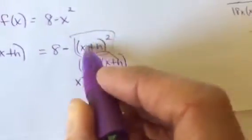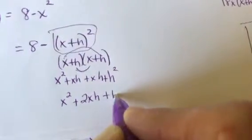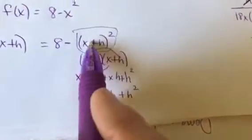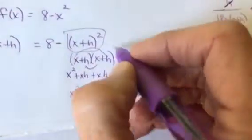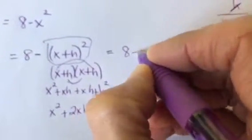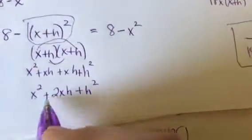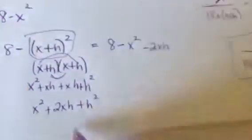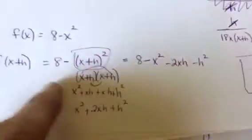And you have to do your middle terms, which would also give you xh. So when you square this, you're getting x squared plus 2xh plus h squared. Okay, that's just this part. But be careful because it's 8 minus this. And remember when you subtract, you're subtracting all of this. So it's going to change your signs. So it's going to be 8 minus x squared minus 2xh minus h squared. Okay, so that is the answer for f of x plus h.